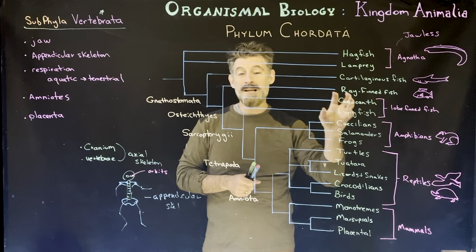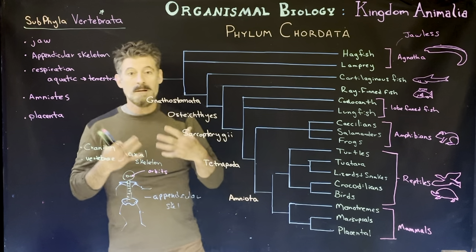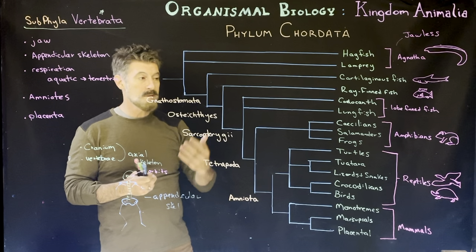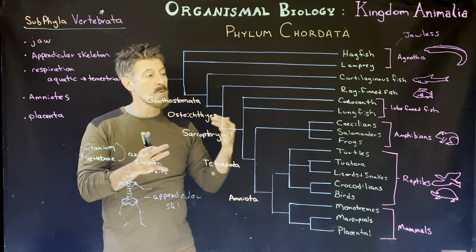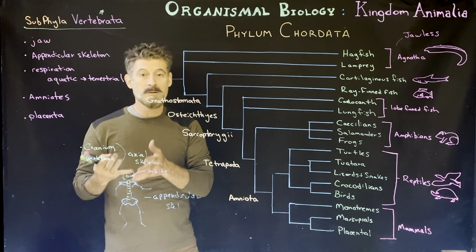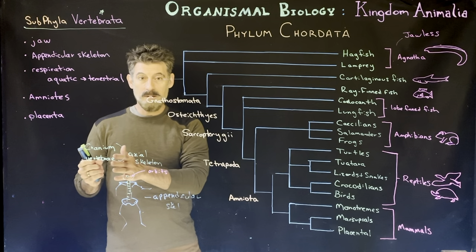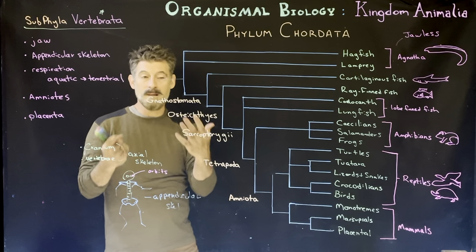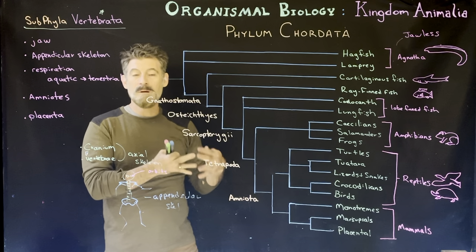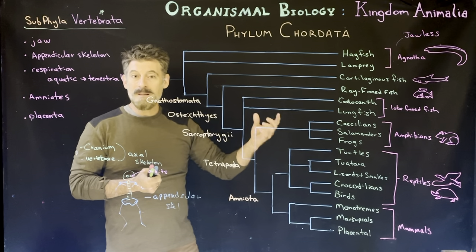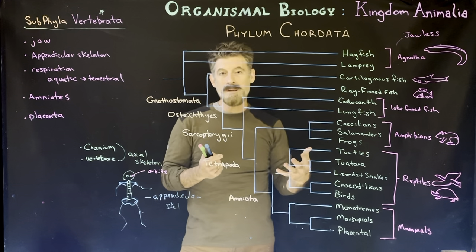Amphibians are tied to water because they lay eggs in water, reproduce in water, and their young have gills and must extract oxygen from water. Upon metamorphosis most develop lungs and move onto land, but they're still tied to water because their skin dries out and they must return to water to reproduce. This is similar to plant evolution — mosses and ferns still need swimming sperm in water to fertilize, keeping them in wet environments.